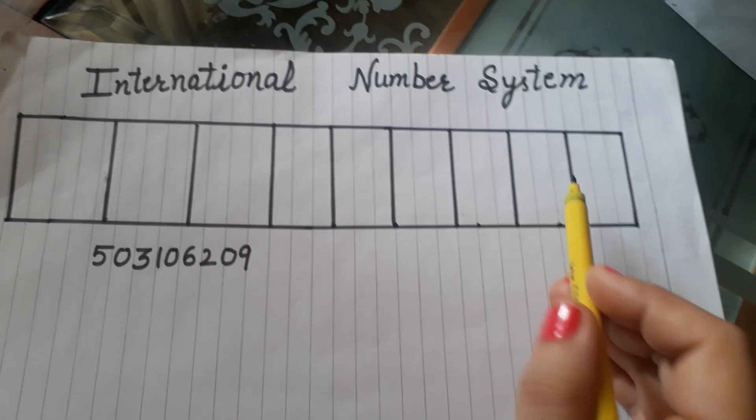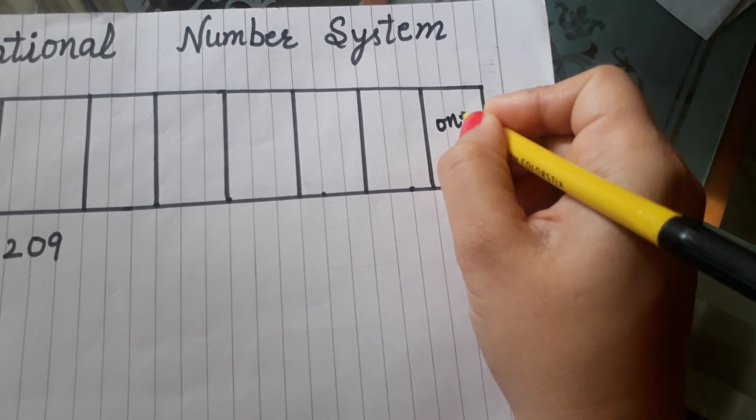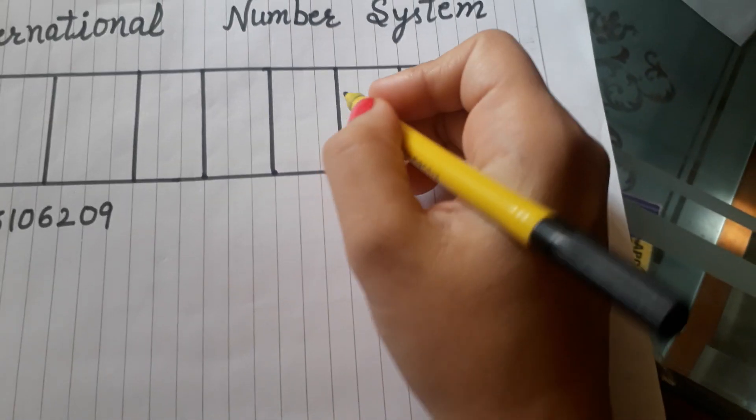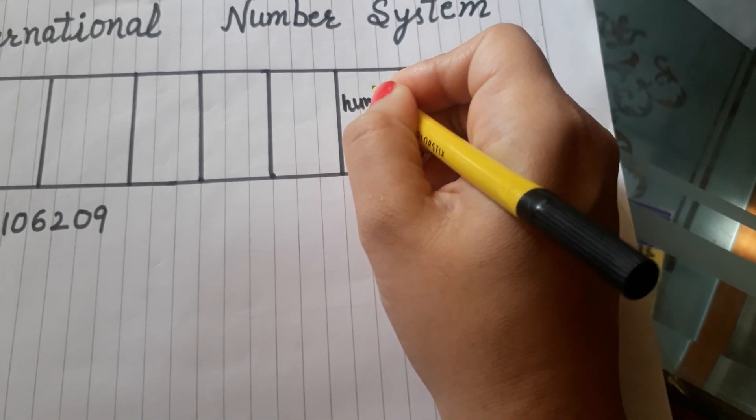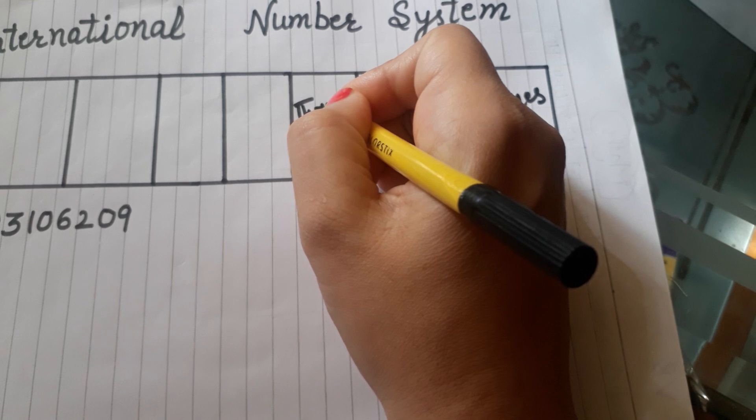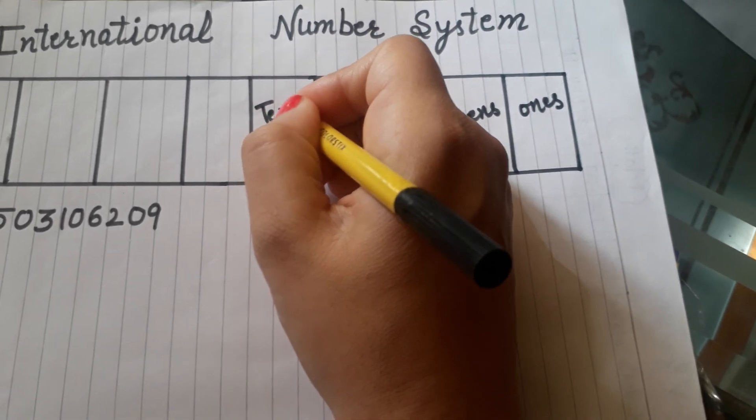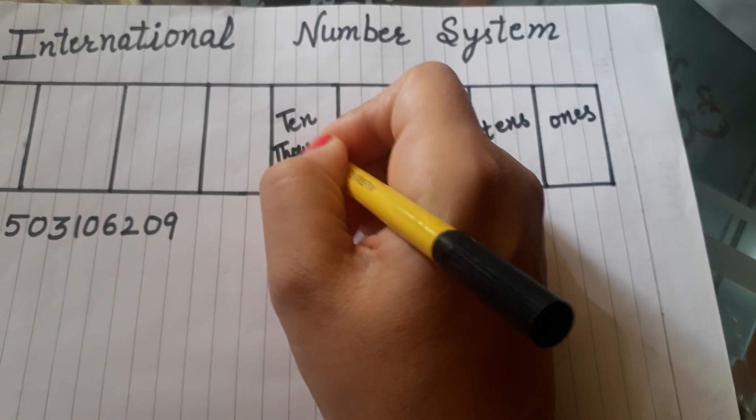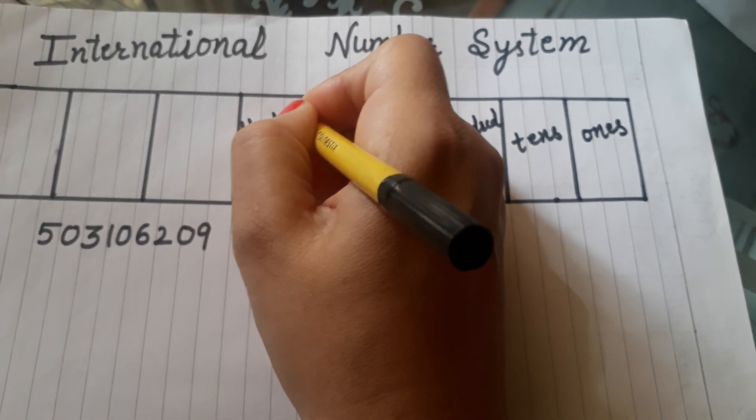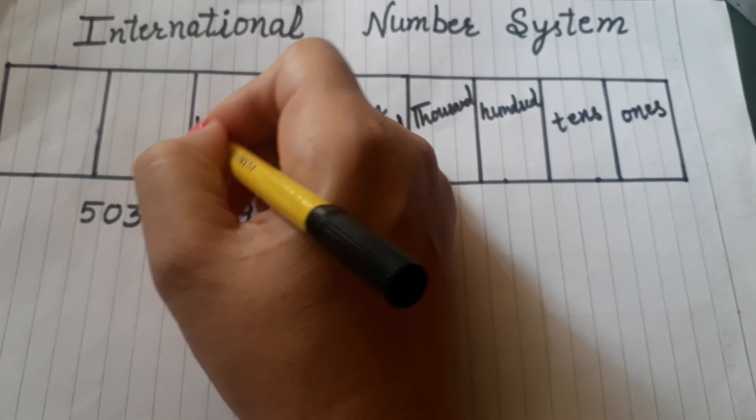How to do this? There are 9 places. First place is ones, then tens, then hundreds, then thousands, ten thousands, hundred thousands, after that million.